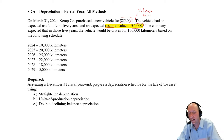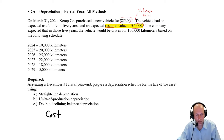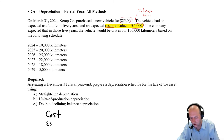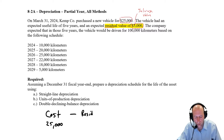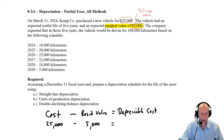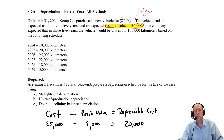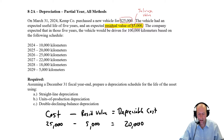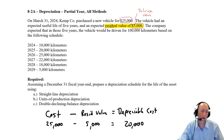The cost of an asset — in this case $25,000 — minus the residual value — in this case $5,000 — equals the depreciable cost: the amount we'll be able to depreciate this asset for. So over the life of the asset, we're planning to reduce its value by $20,000. It's going to go from $25,000 down to $5,000, meaning a reduction of $20,000 is required. That $20,000 becomes a very important number for our calculations.